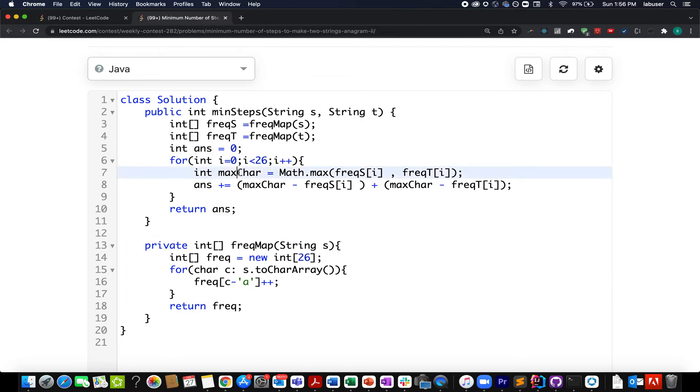I calculate the maximum character count corresponding to each English character starting from the 0th one to the 26th character which is z. I find out the maximum character count, that frequency count that is present among s and t. Once I have that, I subtract it from the frequency of s at index i - this will contribute to one possibility of answer. Similarly, max char minus frequency of t at the ith index contributes to the other possibility. I simply add it to my final answer variable.